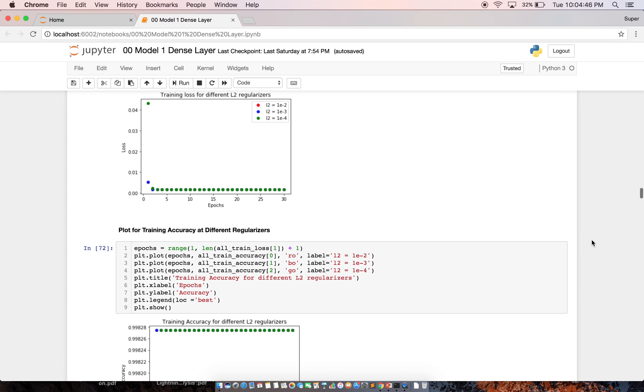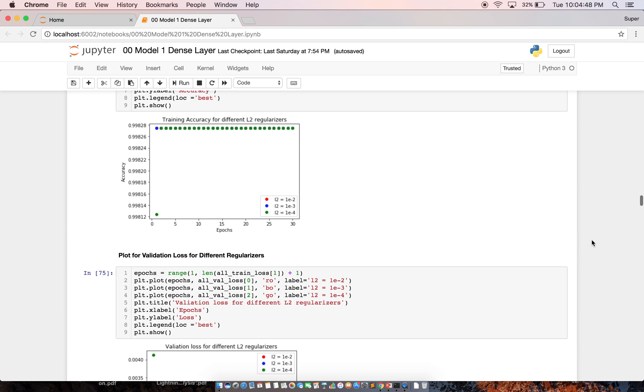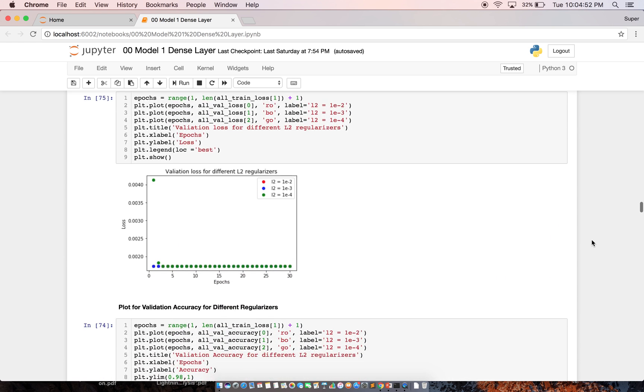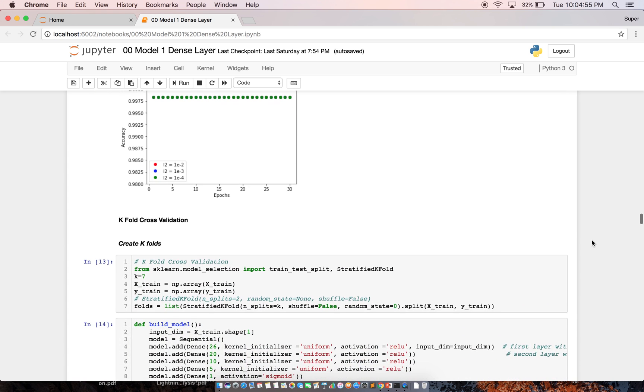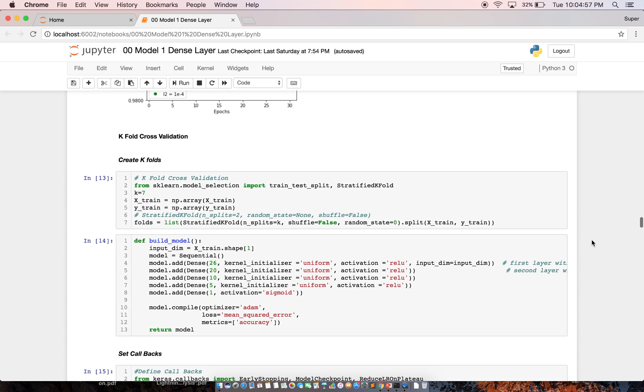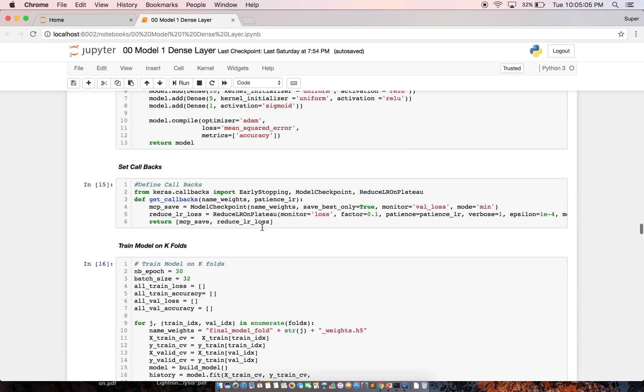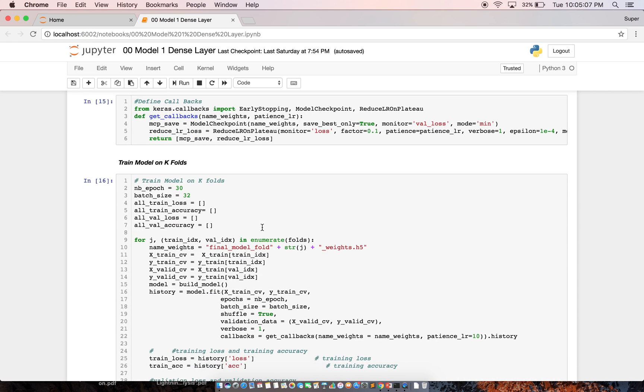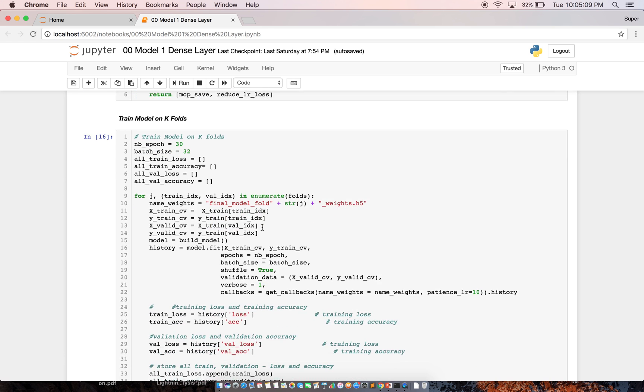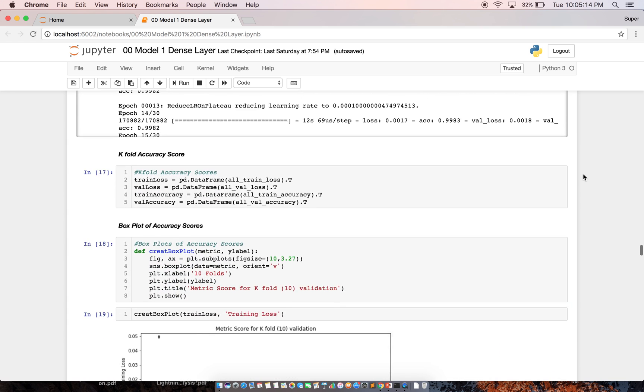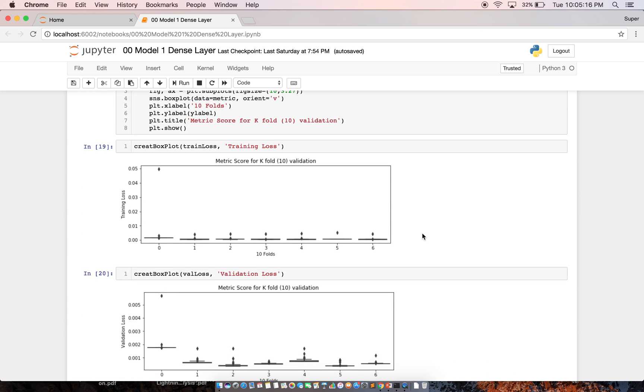And when I look at that loss and accuracy, I found that there is no significant difference based on the regularizing parameters. And I did k-fold cross-validation to understand the consistency of the model. I kept seven folds and I ran my model on all those k folds and observed again the accuracy and loss with respect to each fold.